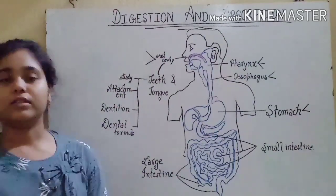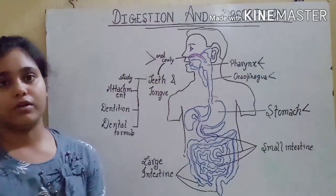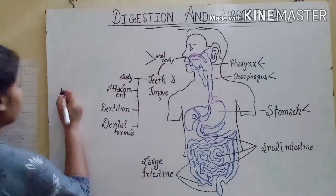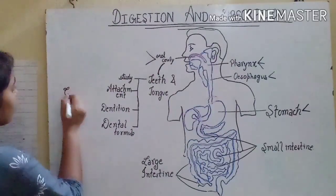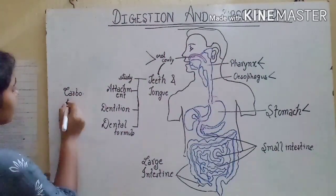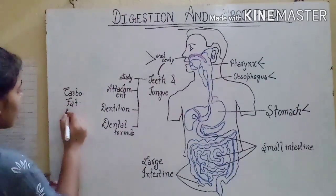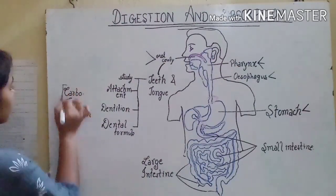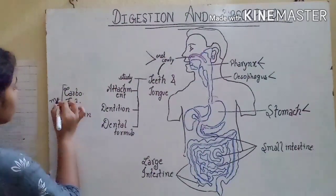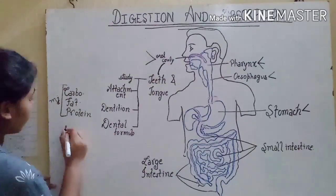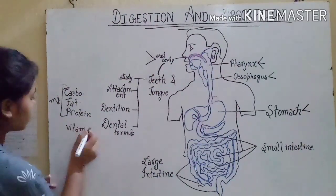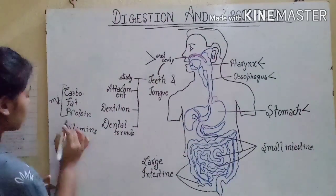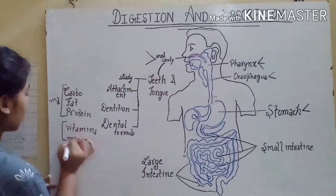We all need energy for doing different kinds of work, and from where do we get the energy? Of course from the food. The major constituents of food are carbohydrate, fat, and protein, while vitamins and minerals are the minor constituents.